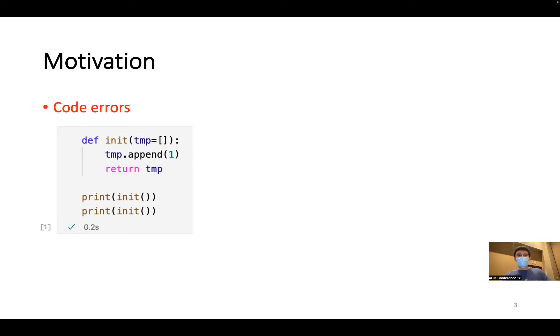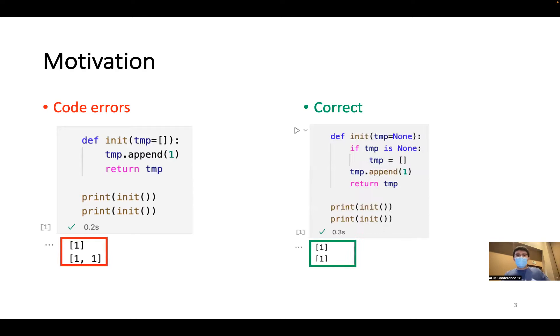But in reality, what you see is something like this, where the one is accumulating in the end of the list you're building. And this is due to the incorrect usage of the default parameter and the list. The correct way to write this is also shown on the right.